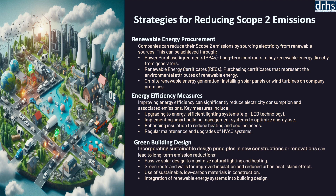The third strategy is Green Building Design. Incorporating green building principles in the design and construction of facilities can significantly reduce energy consumption and consequently scope 2 emissions. Green buildings use passive design elements such as natural ventilation and daylighting, and integrate energy-efficient systems to minimize energy usage. Certification standards like LEED — Leadership in Energy and Environmental Design — provide a framework for designing buildings that are both energy-efficient and environmentally sustainable. By focusing on these strategies, organizations can effectively reduce their scope 2 emissions and promote cleaner energy and more efficient practices.